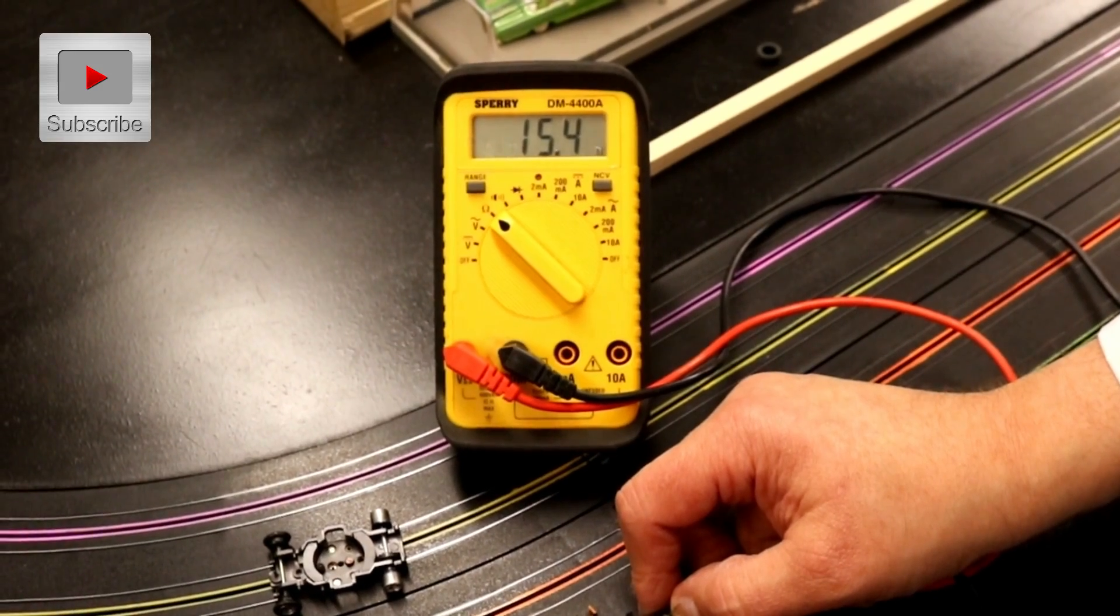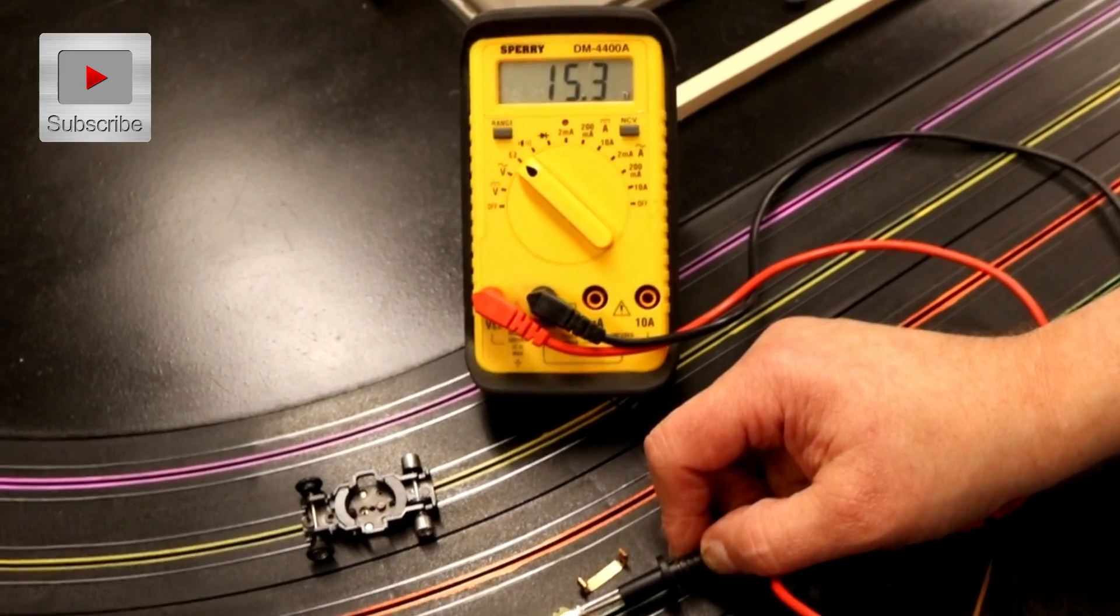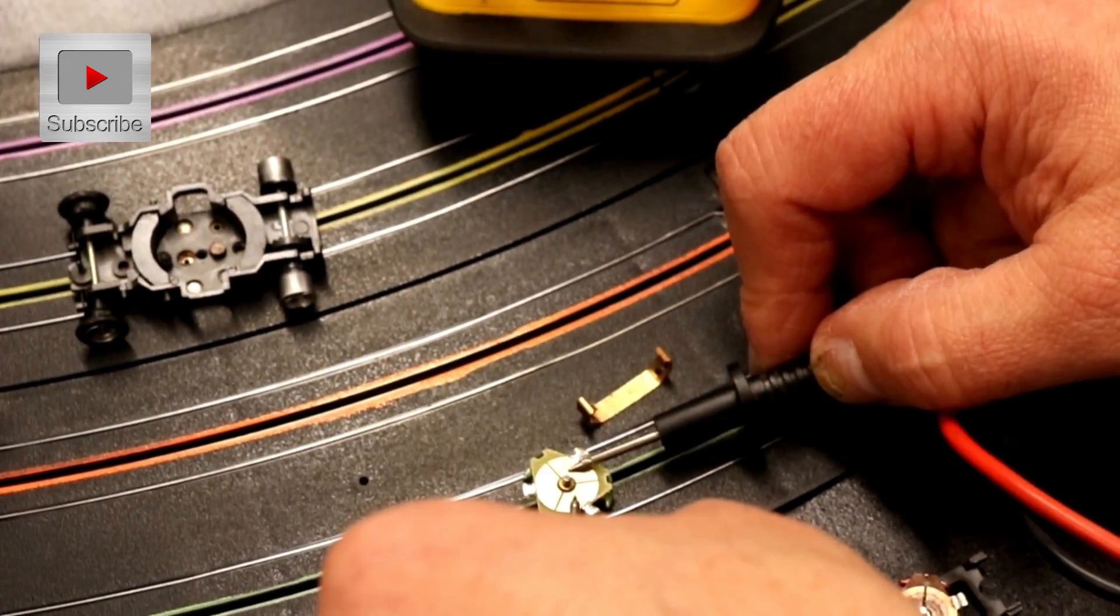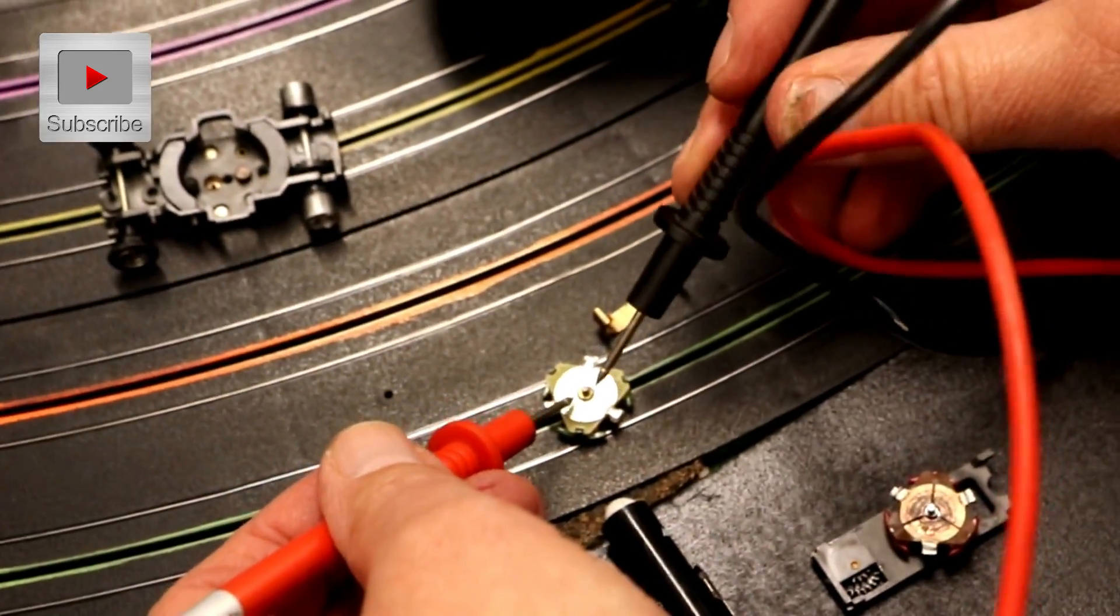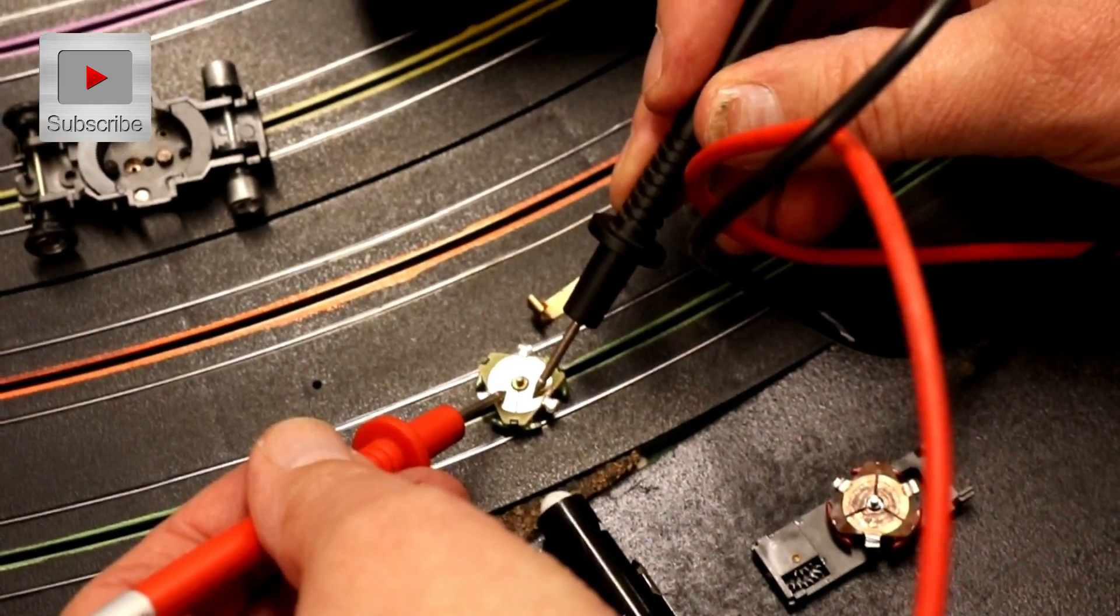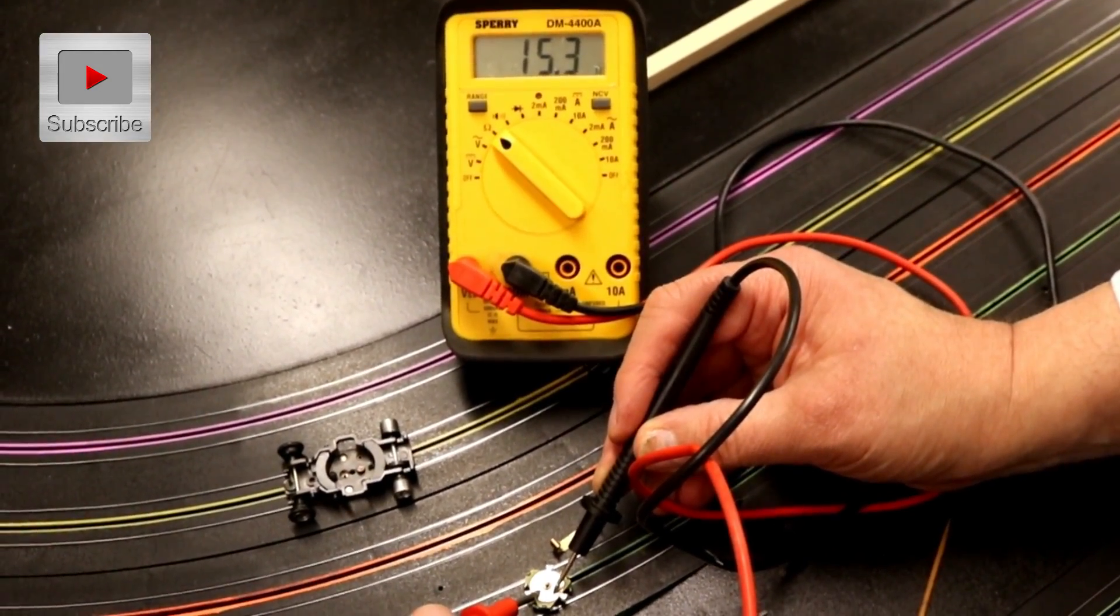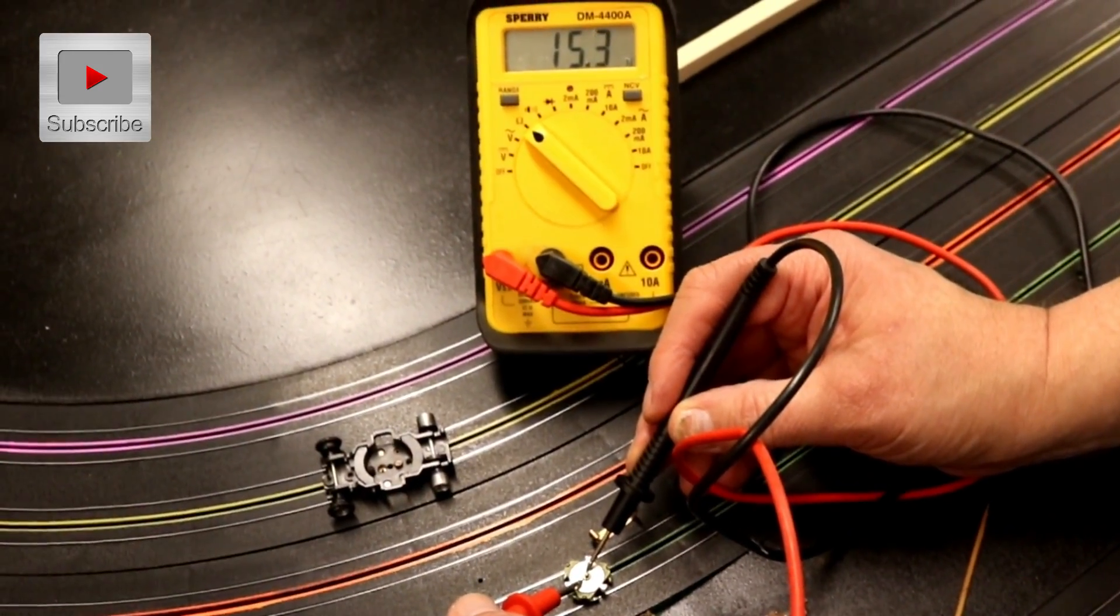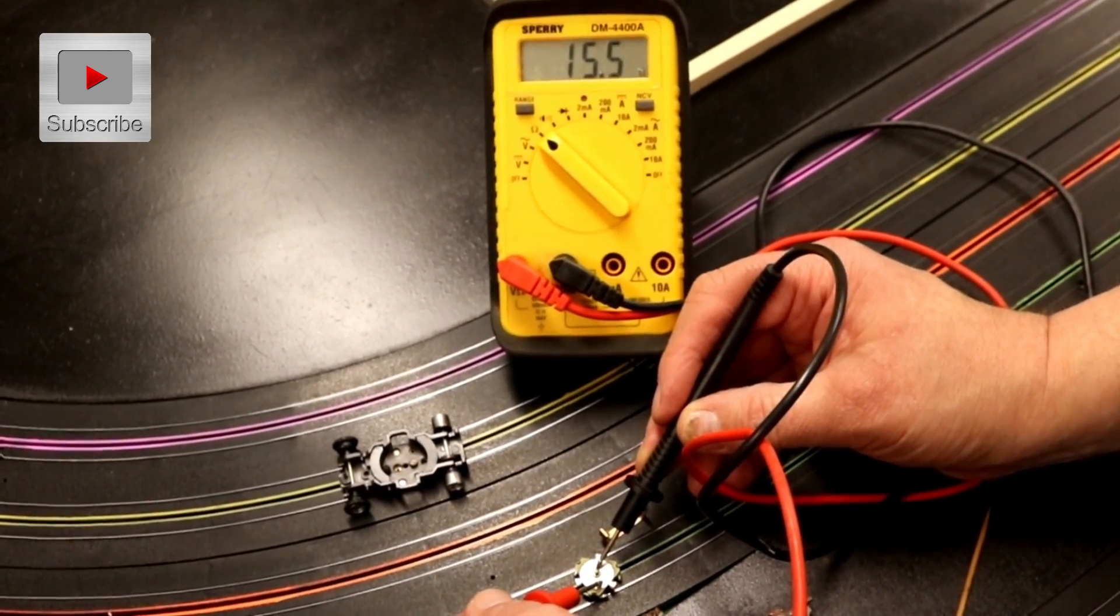See, it's almost identical. You want all your readings, the 15.3 or 4, whatever, you want them to be as close as possible. The closer they are, the better the car will run. It'll actually be more even. So that's what you're doing. See, you'll test this one and this one. Same thing. So that one's like a 15.2, 15.3. So we're pretty close on this. And just test them back and forth. And that's how you test them.